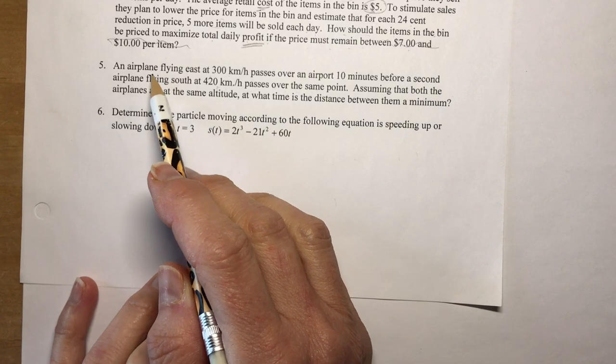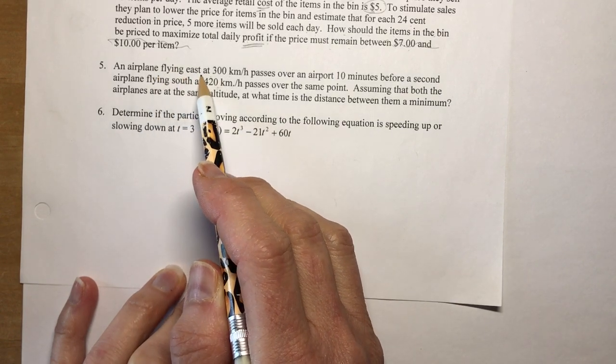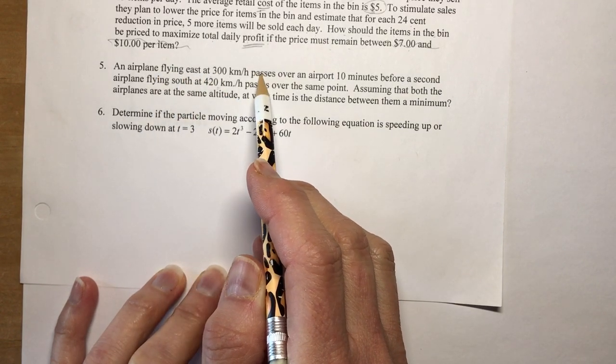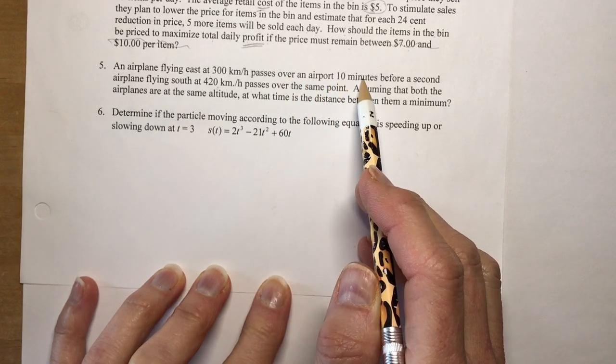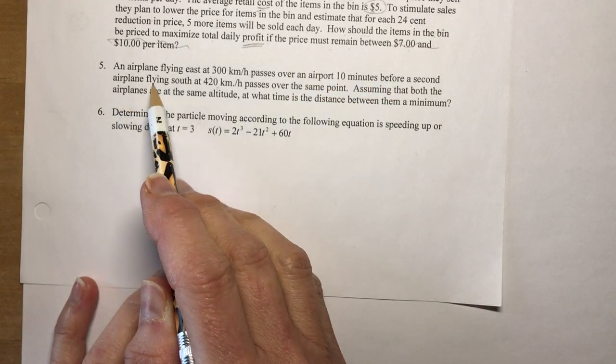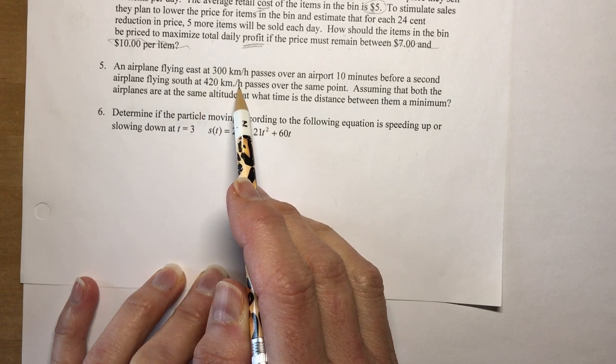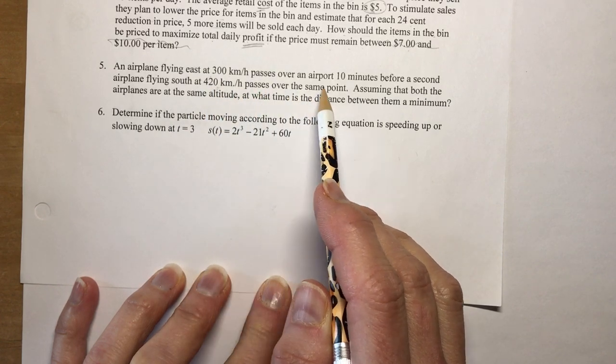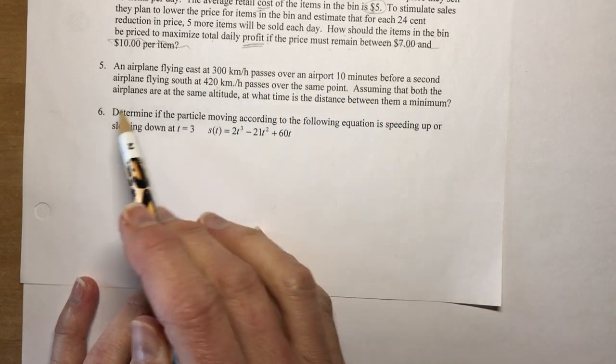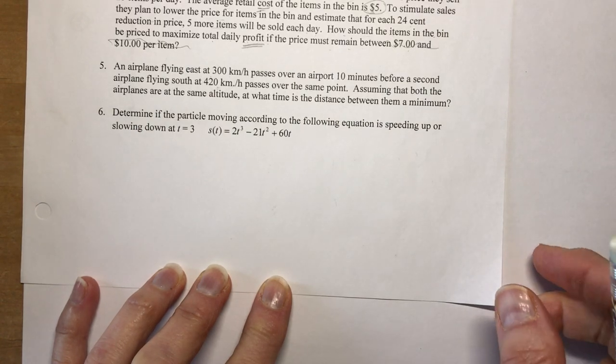So the first question says an airplane is flying east at 300 kilometers an hour. It passes over an airport 10 minutes before a second airplane flying south at 420 kilometers per hour passes over the same point. Assuming they're both at the same altitude, when is the distance a minimum.